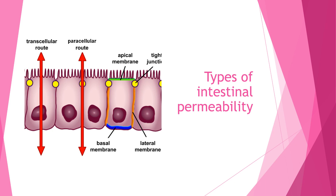Here we have a picture illustrating what I just mentioned. We see the transcellular route, where bacterial components are going directly through the cell, and the paracellular transport going in between the cells. Both can be problematic and both occur for different reasons.